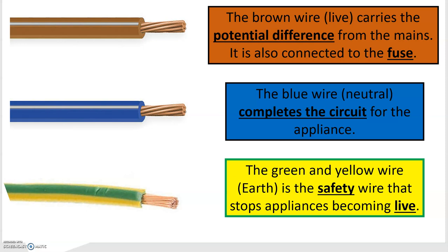The blue wire is the neutral wire and completes the circuit for the appliance. Then you've got the yellow and green which is your earth wire for safety. That stops the appliance from becoming live, which means it can't catch fire.